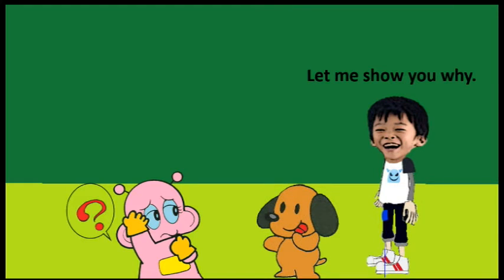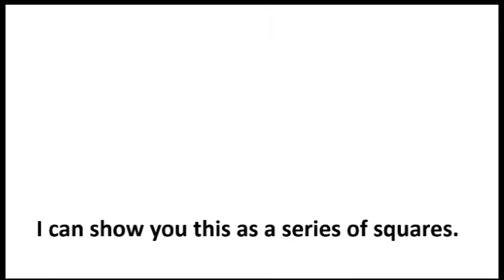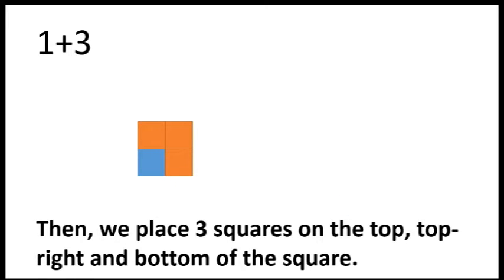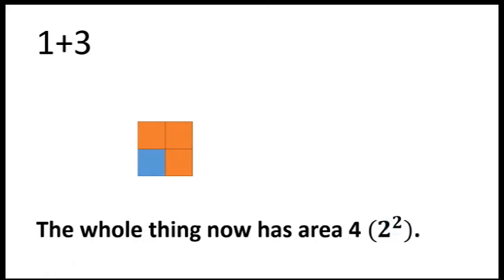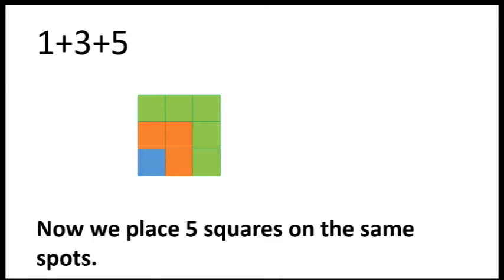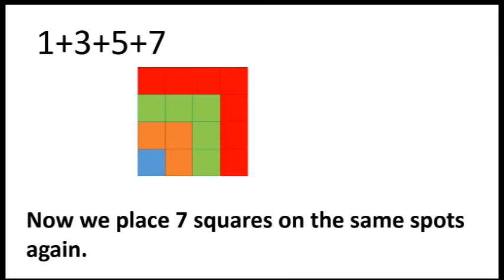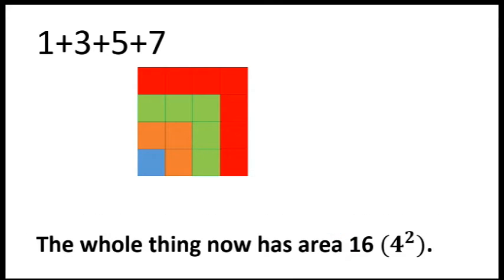Let me show you why. Let me show you this as a series of squares. We start with the square of area 1, which is 1 squared. Then we place 3 squares on the top, top right, and bottom of the square — the whole thing now has area 4. Now we place 5 squares on the same spot; the whole thing now has area 9. Now we place 7 squares on the same spot again; the whole thing now has area 16.